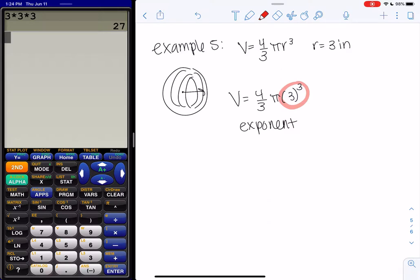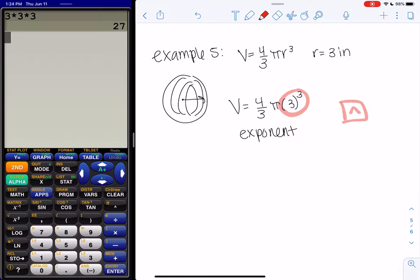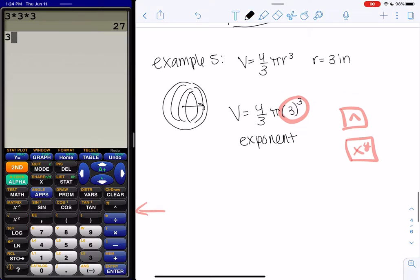So depending on your calculator, the power button usually looks like a little arrow pointing up, or it looks like X to the Y, depending on the calculator that you're using. So on this calculator I see it right here, so I'm gonna go ahead and type three to the—is how I read that—three, and it'll look like a power.